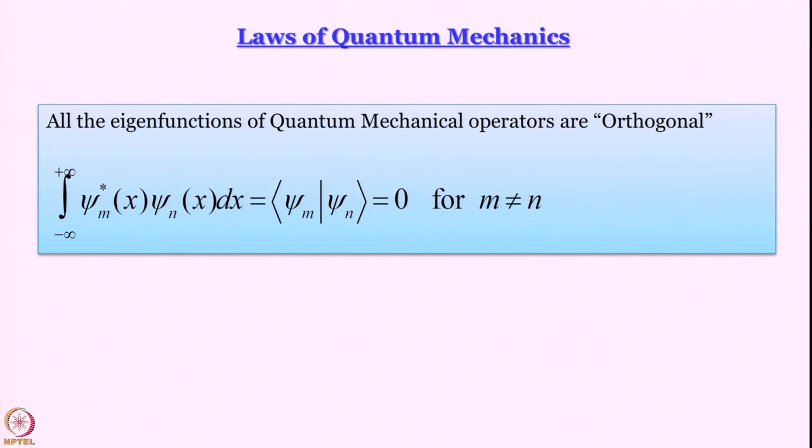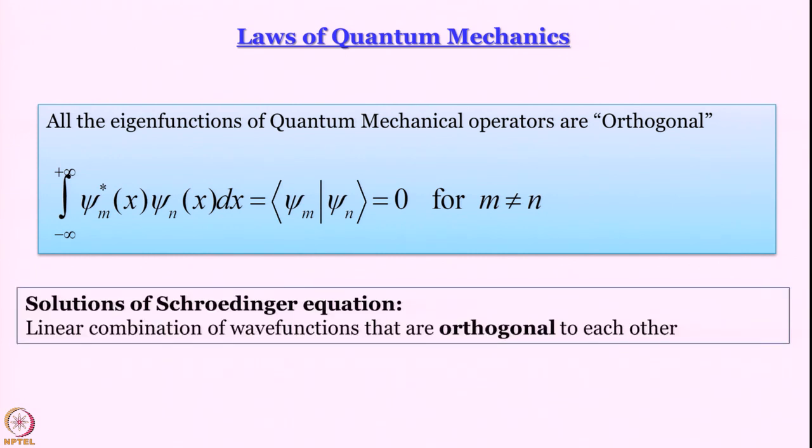Another thing is all eigenfunctions of quantum mechanical operators are orthogonal. In fact, I like to say that solutions of Schrodinger equations are such that they are actually linear combinations of wave functions that are orthogonal to each other. What does that mean? What it means is that the solutions are all in some kind of a function space.